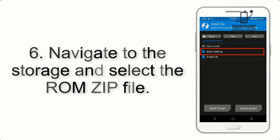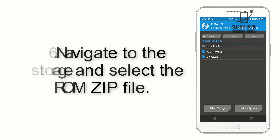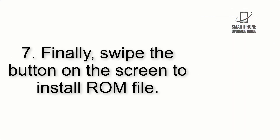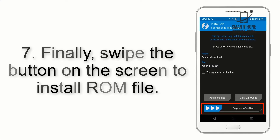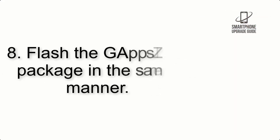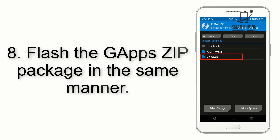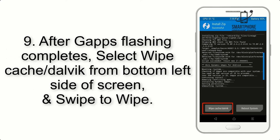Step 6: Navigate to the storage and select the ROM zip file. Step 7: Finally, swipe the button on the screen to install the ROM file. Step 8: Flash the GApps zip package in the same manner.